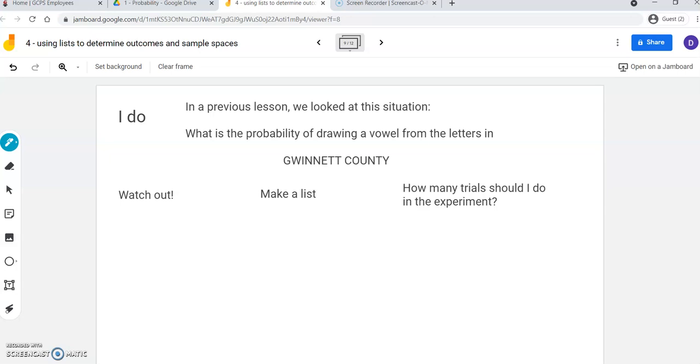All right. So I'm just going to jump right into an I do here. I'll be able to go over some stuff we need to connect to as we go. So in a previous lesson, we looked at this situation at some point. What's the probability of drawing a vowel from the letters in Gwinnett County?